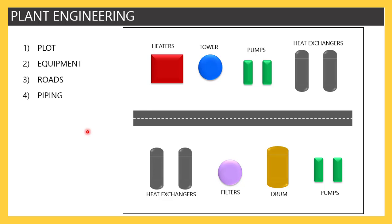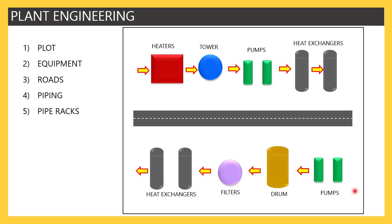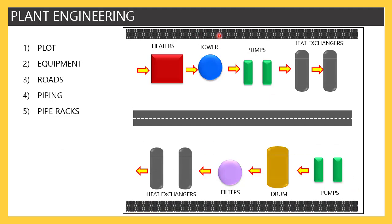After roads, we move to piping. When you plan piping, you learn how much space is required for the pipes going from one equipment to another. We generally make a conceptual routing to understand how far the piping goes and how much space is required. After that, pipe racks are placed — the black structures you see on screen are the pipe racks, positioned on either side of the equipment so that piping can enter from the rack and reach the equipment.